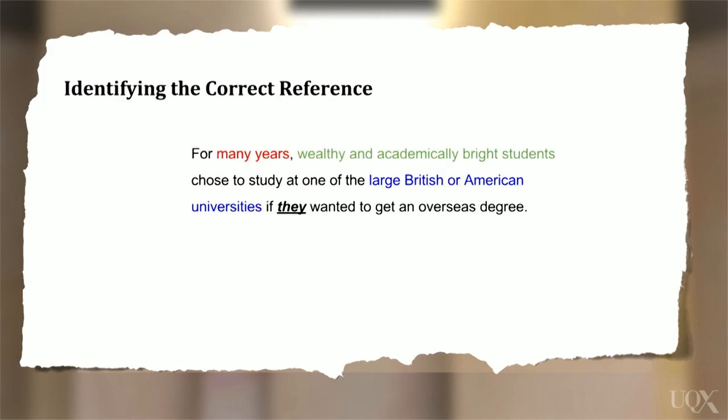Let's look at one more example. Look at the reference word 'they' in this sentence. There are three things that this word might be referring to: many years, wealthy and academically bright students, or large British or American universities. Which one do you think is correct?